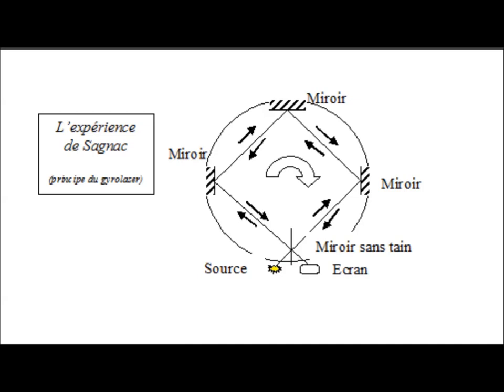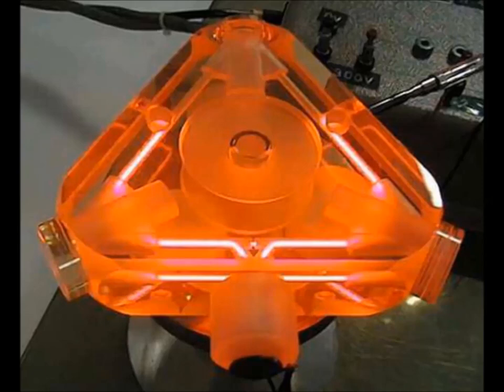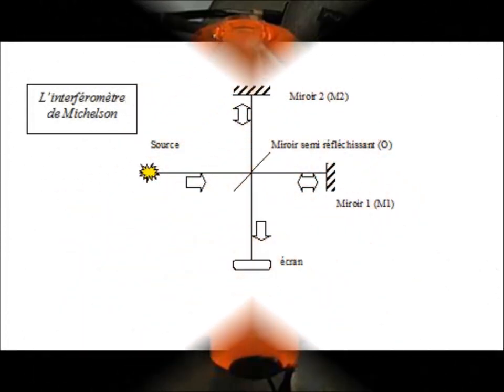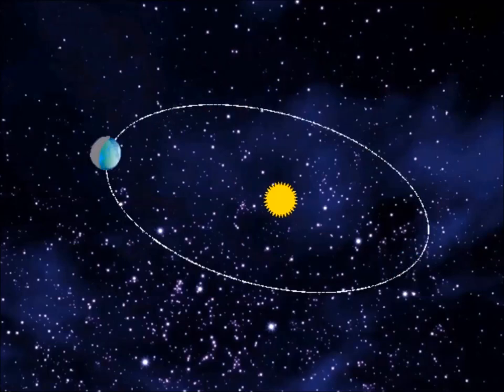However, the special relativity theory is an approximation of general relativity when fields are very low. Special relativity should be able to explain the Sagnac experiment for very low speeds. Gyrolasers are able to detect rotation as weak as an hundredth of degree per hour. However, the special relativity theory is used to explain the Michelson experiment. The earth orbits the sun at a speed of 1/24th of a degree per hour, and therefore at a speed of rotation four times faster than the detectable by the gyrolasers. But Professor Selleri demonstrated that the special relativity theory cannot explain the Sagnac experiment.